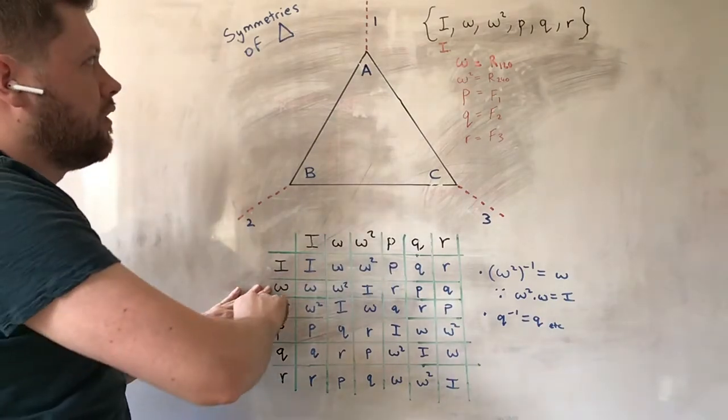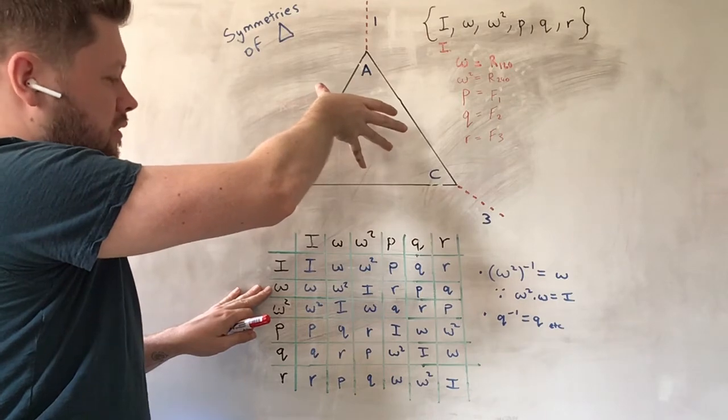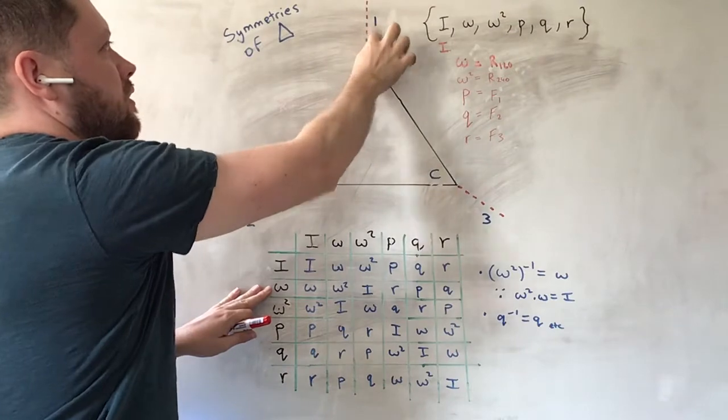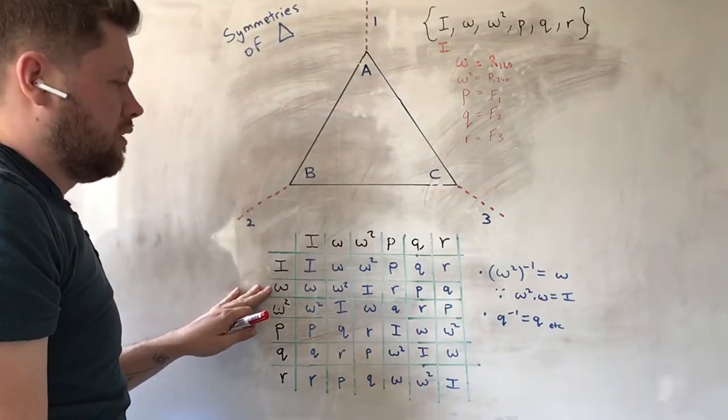This is an interesting case. So, we do omega, which is a rotation of 120 degrees, and then we do P, which is flip it around the axis labelled 1.